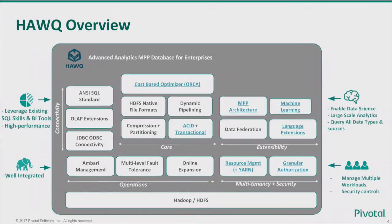Hawk overview. A primary premise for Hawk was to make sure somebody transitioning from a traditional data warehouse — like Oracle, Teradata, or Netezza — would have a seamless experience. You could take all your schemas and DDLs and push them into Hawk. We made it ANSI SQL compliant to standards 92, 99, and 2003 — and when I say ANSI SQL compliant, I'm not using the term loosely. We are very strictly ANSI SQL 2003 compliant, with JDBC, ODBC connectivity, and OLAP extensions.